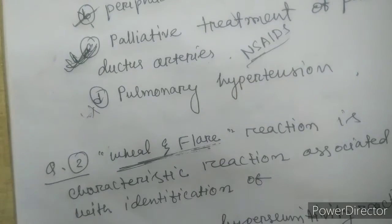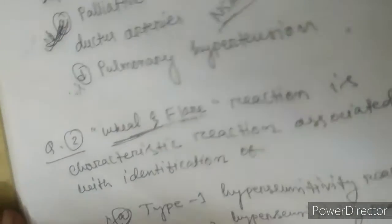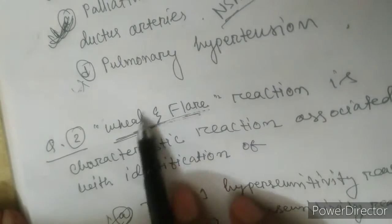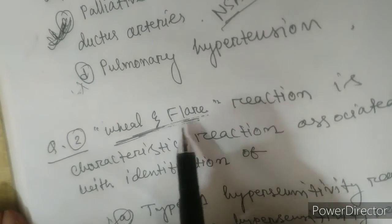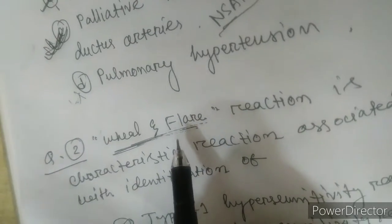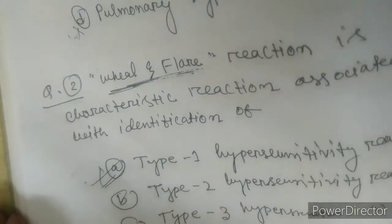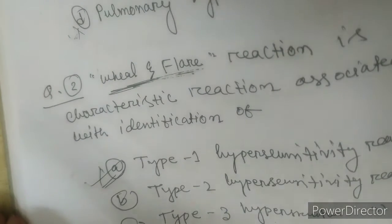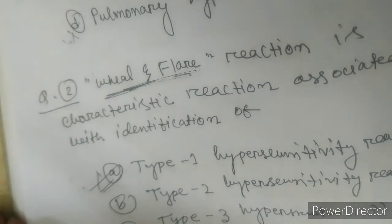Type 1 hypersensitivity involves IgE — this is where the wheal and flare reaction occurs, basically representing inflammation and redness. Type 2 hypersensitivity involves IgG and IgM. Type 3 and Type 4 also have their own mechanisms. I will discuss hypersensitivity reactions in detail in a separate video. The correct answer here is Type 1.